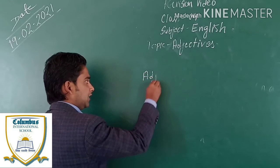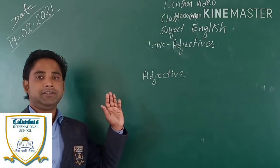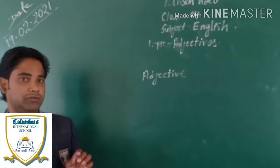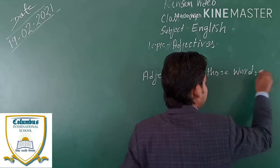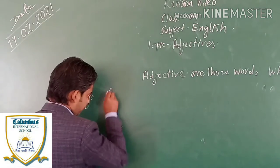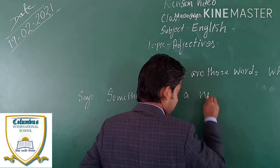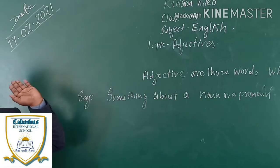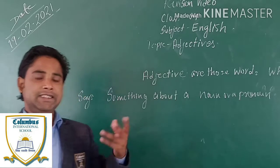Adjective — in Hindi we say 'visheshan'. Adjectives are those words which tell us something about a noun or a pronoun. This is the definition of adjective: adjectives are those words which say something about a noun or a pronoun — meaning they describe the features of a noun or a pronoun.